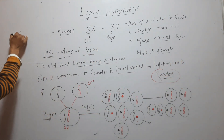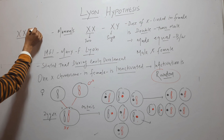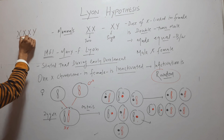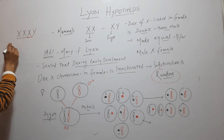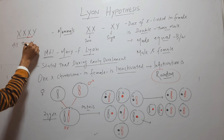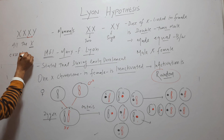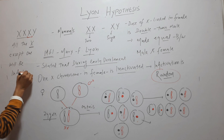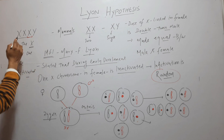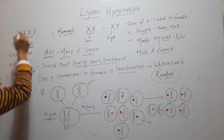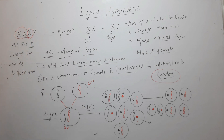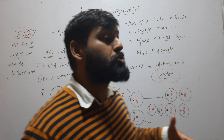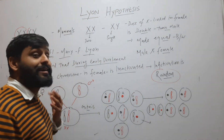But when more than two X chromosomes are present, then all the X chromosomes except one will be inactivated. For example, if there are three X chromosomes, then except one, all two will be inactivated. This is the Lyon hypothesis, which says that during development, one X chromosome is kept active and all others are inactivated, and this inactivation is random.